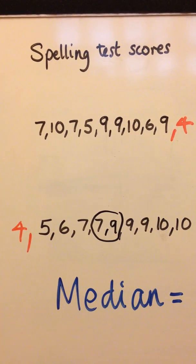To find the median, you need to find the midway point between the 7 and 9, which is 8.